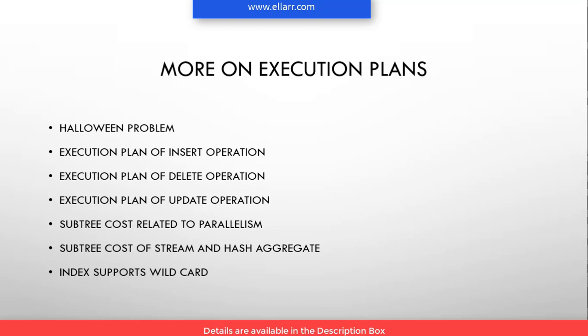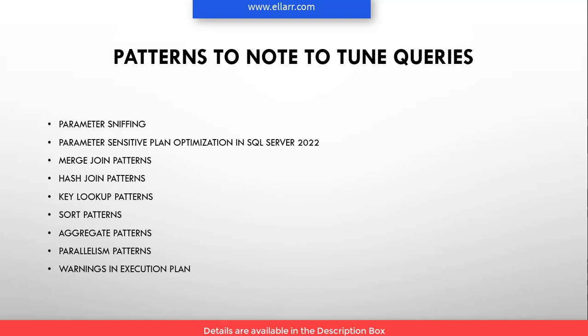I will also show you that indexes support wildcard characters. Then at the end of the course, I will explain some patterns to observe when you look at the execution plan so that you can tune your SQL commands — important points to keep in mind related to merge join, hash join, key lookup, sort, aggregate, parallelism, etc. I will also show you what kind of warnings appear in execution plans. I will explain the parameter sniffing concept, and in SQL Server 2022 a new concept is introduced called parameter sensitive plan optimization. All these things will be covered in this course.